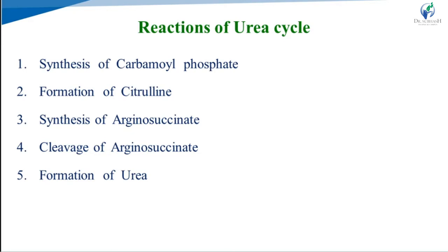The five reactions of the urea cycle are: first, synthesis of carbamoyl phosphate; second, formation of citrulline; third, synthesis of argininosuccinate; fourth, cleavage of argininosuccinate; and fifth, formation of urea.